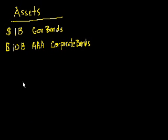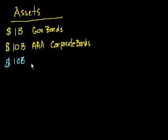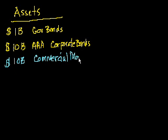Let me draw a couple more assets here to show you that this next one is the stinkiest of them all. Let's say I have another $10 billion of commercial mortgages — essentially loans to companies to buy land, develop land, or buy buildings that they're going to rent out to other people. Once again, it's just a loan to someone else, which is an asset because they owe me interest and eventually they have to pay the money back.